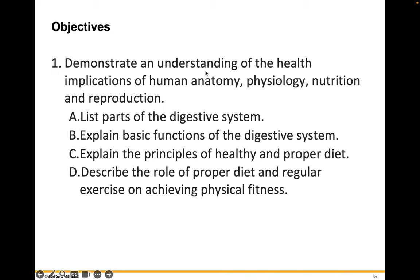At this point, you should be able to demonstrate an understanding of the health implications of human anatomy, physiology, and nutrition. You should be able to list the parts of the digestive system from memory, explain the basic functions of each of those organs and the accessory organs, explain the principles of healthy and proper diet, and describe the role of proper diet and regular exercise on achieving physical fitness. If you have questions, please make sure you jot them down, bring them to class, shoot me an email, or let's chat about them in office hours or on Zoom. Thank you.